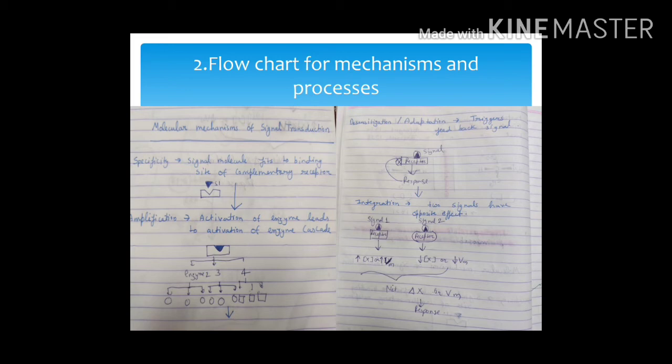Then I show you the desensitization, how the response affects the receptor and how the signal is blocked. The integration has two different types of signal. We have made two different pictures. The signal is one and two. Finally, we have integration with delta X or delta VM. Whatever mechanism it is, we have to make points with heading. If possible, make a picture representation or a flow chart.